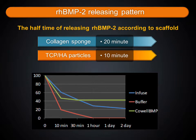In Coal BMP, RHBMP2 is used with TCP/HA particles. Because of this early releasing pattern, bleeding at the graft site must be controlled to prevent BMP2 from escaping. For prevention of RHBMP2 escape from the graft site, RHBMP2 solution could be injected into the grafted site after primary closure of the wound.